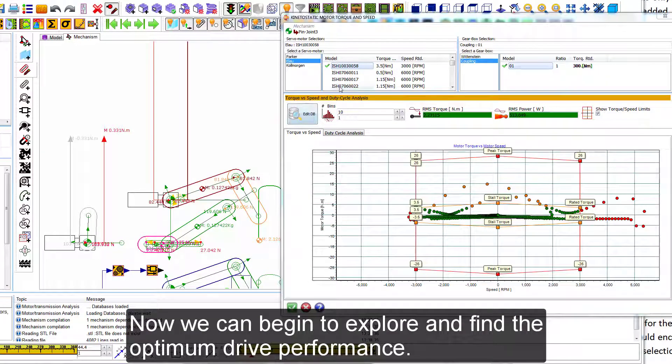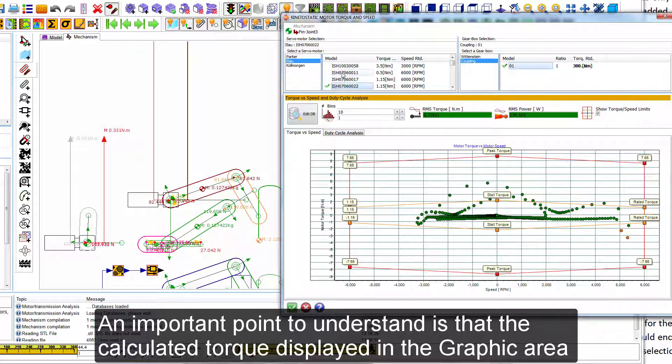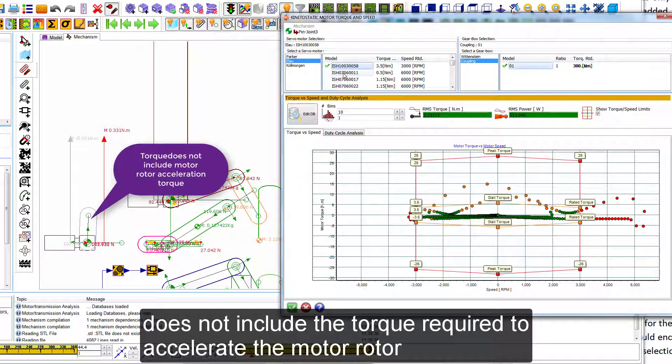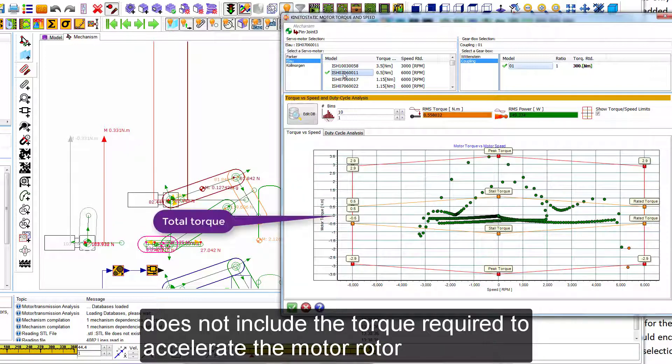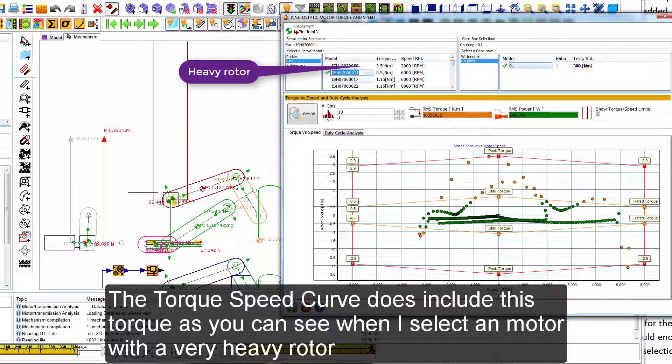Now we can begin to explore and find the optimum drive performance. An important point to understand is that the calculated torque displayed in the graphic area does not include the torque required to accelerate the motor rotor. The torque speed curve does include this torque, as you can see when I select a motor with a very heavy rotor.